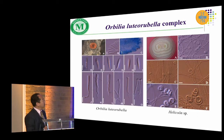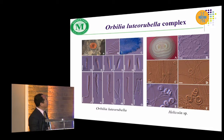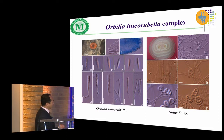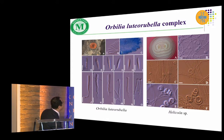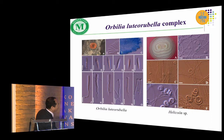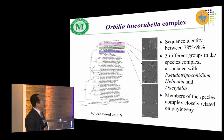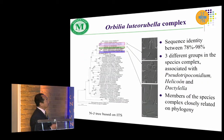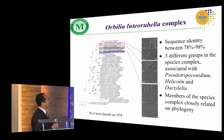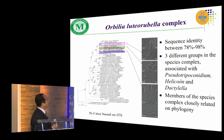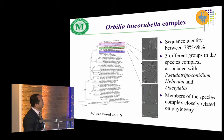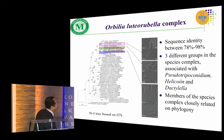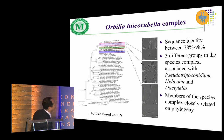Here is another species, Orbilia luteor rubella. Here are some telemorphic forms and here are anamorphic forms. Based on the phylogenetic tree, the sequence identity is between 78 to 98%. Three different groups are connected with the telemorph, and they belong to three different anamorphic genera.